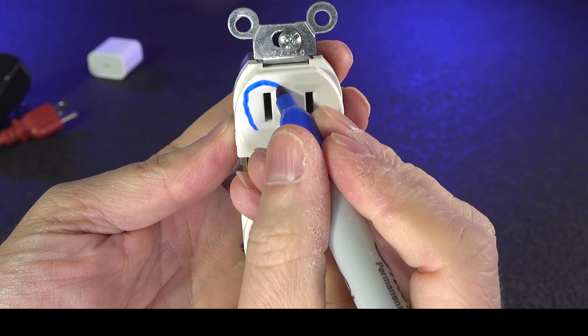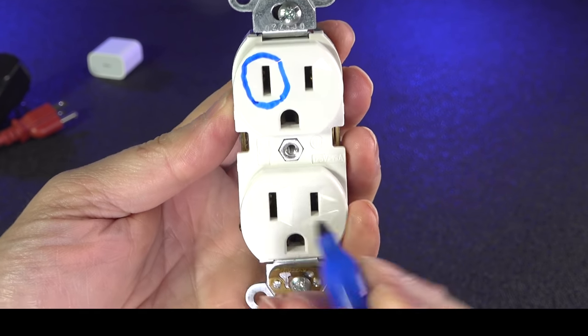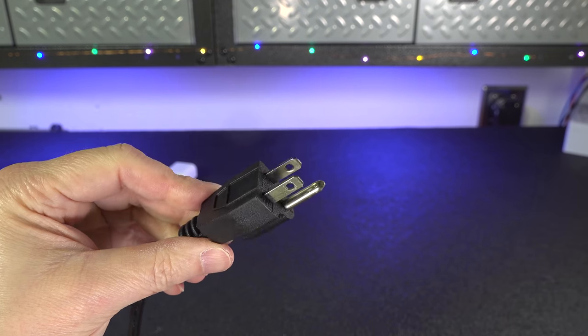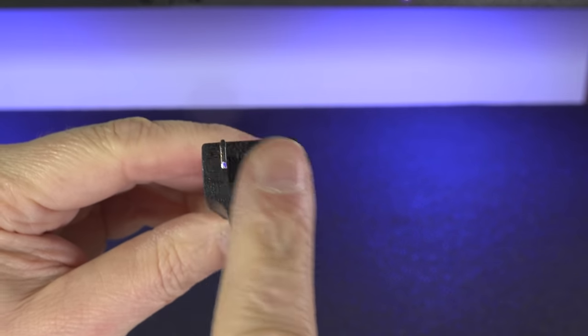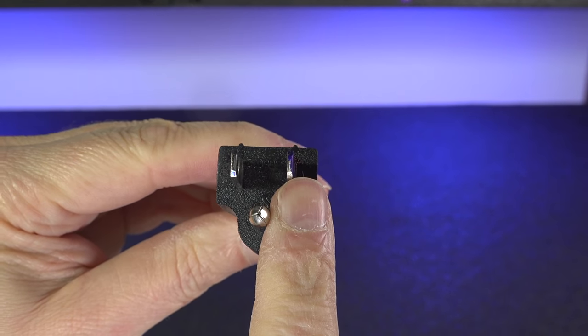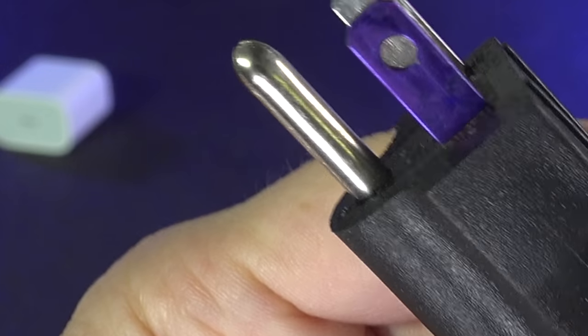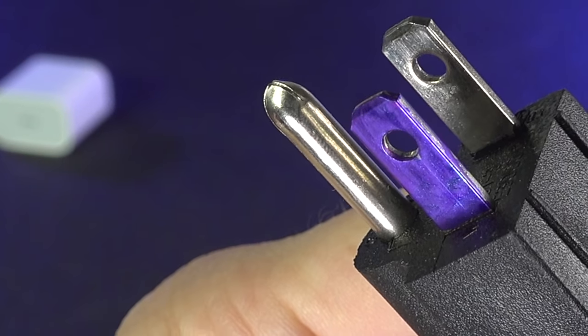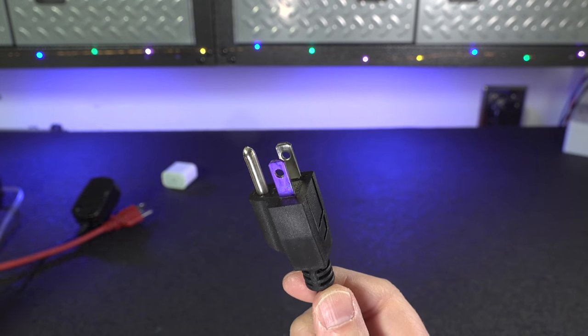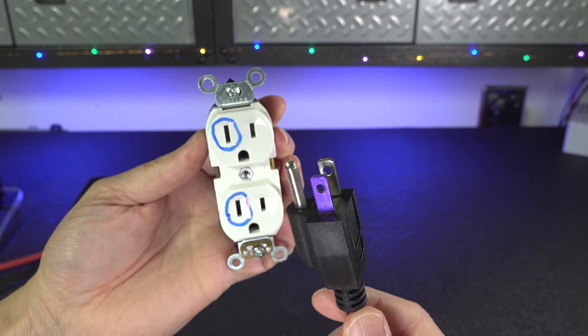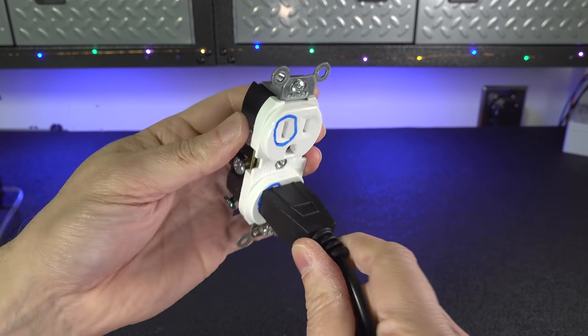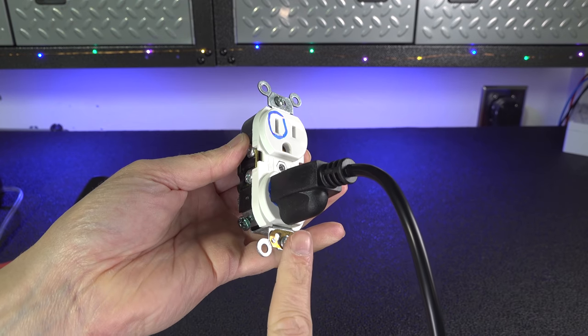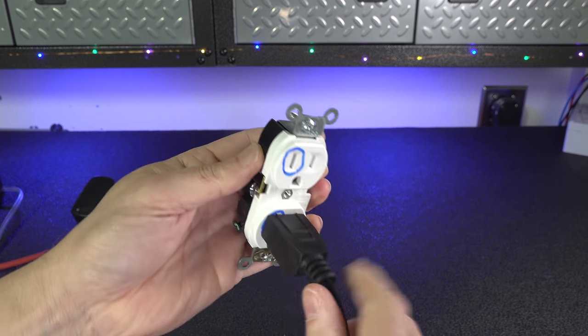But then why do some cords still not use this setup and are they unsafe to use? Well, let's start by looking at this typical three-prong cable. Both of these prongs on top are exactly the same size and it's not polarized. But this plug has a little bit of a secret and that's this ground prong on the bottom. Even though the two prongs on top are identical, you can only plug this in in one direction. You can't flip this upside down. So even without the bigger prong, the neutral and the hot will still end up in the correct position.